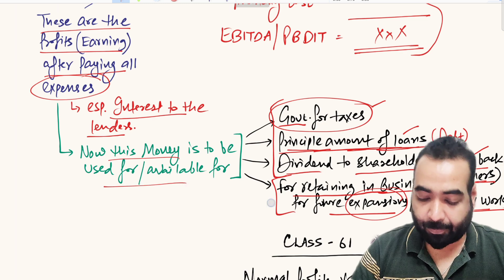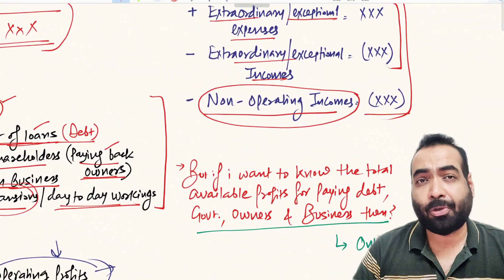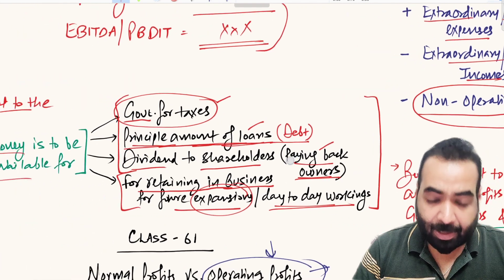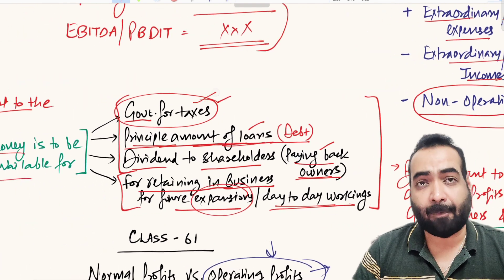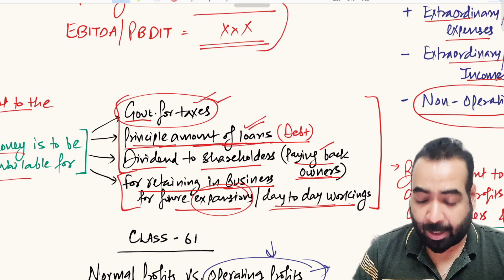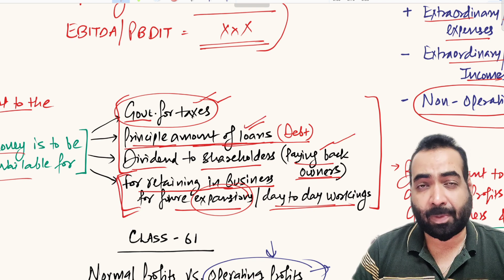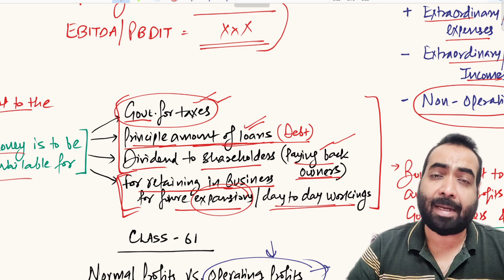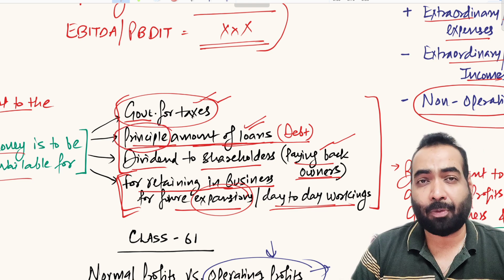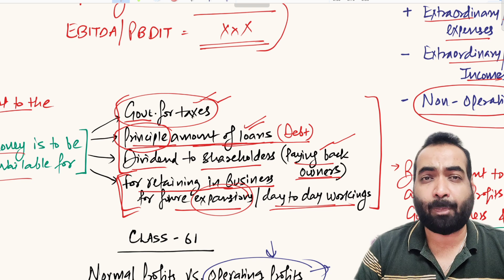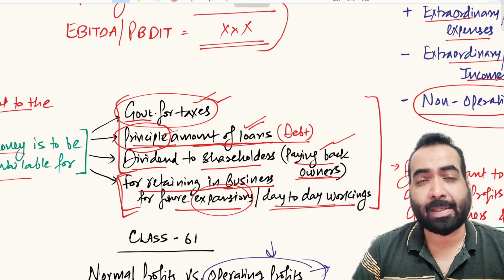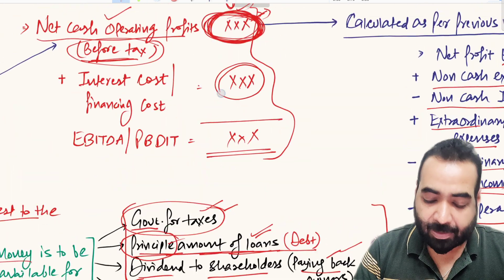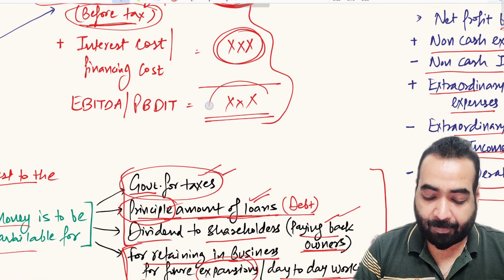Now this money can be used for these four options. But the question is: if we want to calculate how much total profit we have earned to pay off the government, debt financers, equity financers, and the remaining for the business — here only the principal amount is calculated. If we want to calculate cash operating profits that will be used to pay the whole debt — principal plus interest — then we have to add back the interest. When we add back the interest, we get our figure of EBITDA.